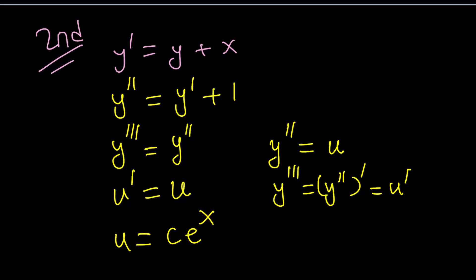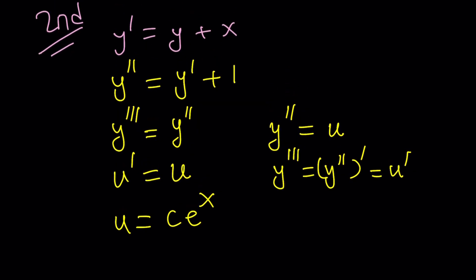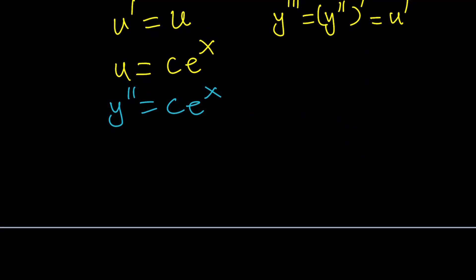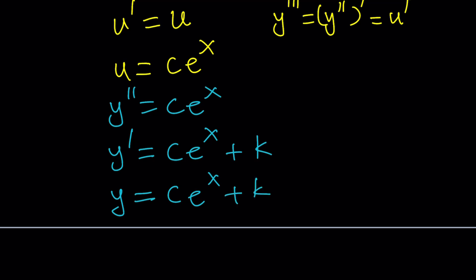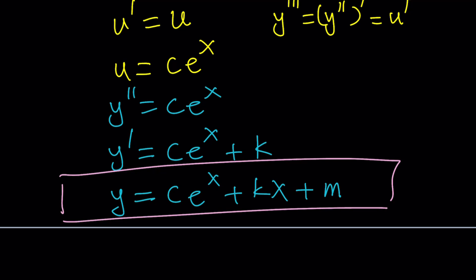Now we find y by integrating. Since u equals y double prime, we substitute back: y double prime equals c times e to the x. Integrating once gives y prime equals c times e to the x plus k, where k is a new constant of integration. Integrating one more time gives y equals c times e to the x plus k x plus m, where m is another constant.